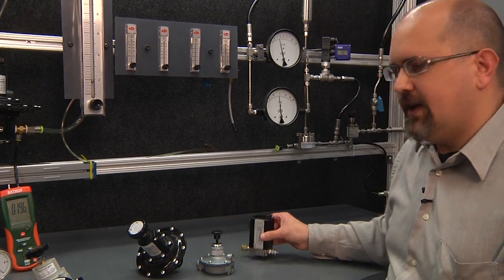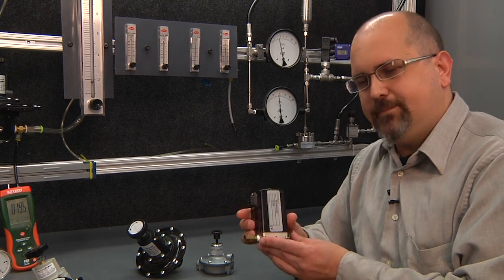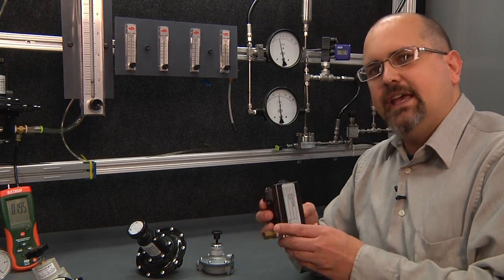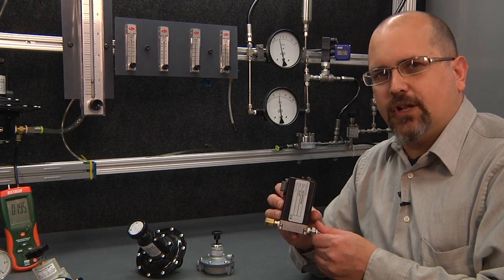We also offer electronic low pressure regulators. This electronic model controlled electronically is able to control as low as 0 to 4 inches of water column full scale.